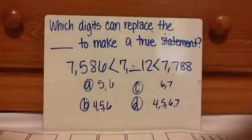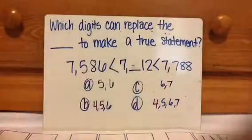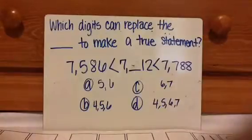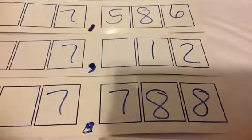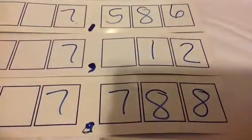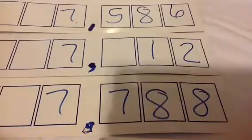Okay, let's look at another question: which digits can replace the blank to make a true statement? This number has to be larger than this number, but then this number has to be less than that number. Press pause, work the problem, and press play to check. So I basically wrote these numbers, and you could do this on notebook paper and just keep erasing the hundreds place to check it — you don't have to have a marker board. My answer choices are 4, 5, 6, and 7. I'm going to try all the numbers out, put a check by the ones that work, and X out the ones that don't. Then the answer choice that has the numbers I want is the one I'll pick.